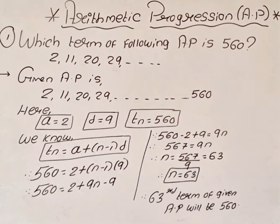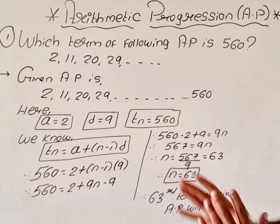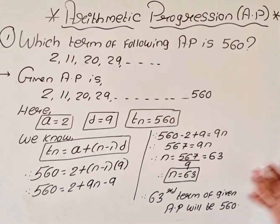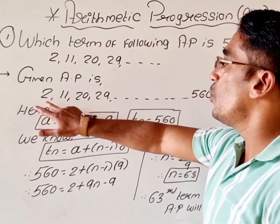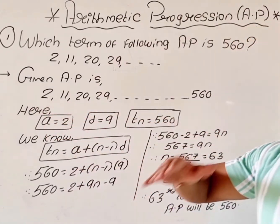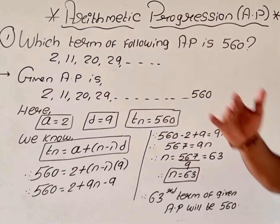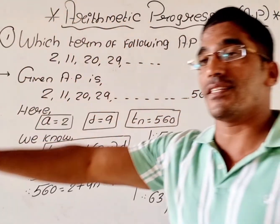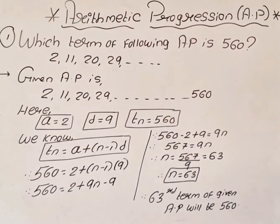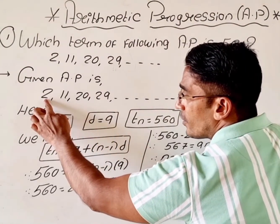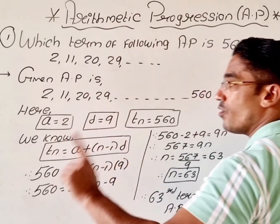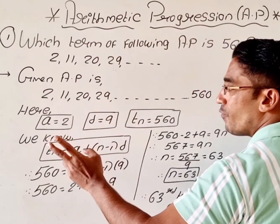Let us review the sum. The question was: which term of the following AP is 560? The AP was 2, 11, 20, 29, and so on. In this AP we are going to get the number 560, and we had to find out when that number 560 comes. I took A as 2, because the first number is always considered as A.